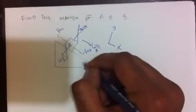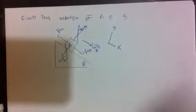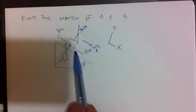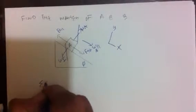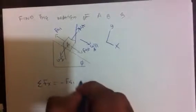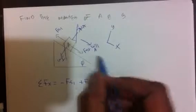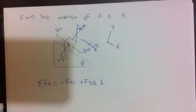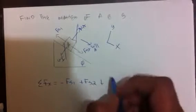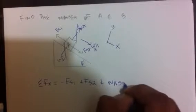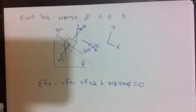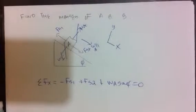Our coordinate system consists of x and y as shown. From the free body diagram, Block A has Force of Spring 1, Force of Spring 2, weight parallel, and normal force acting on it. Taking the sum of forces in the x-direction: Force on Spring 1 acts in the negative x direction, Force on Spring 2 acts in the positive x direction, and the weight parallel to the surface is given by W_A times sine(theta). Sum of forces equals zero since there is no acceleration — this is a statics problem.